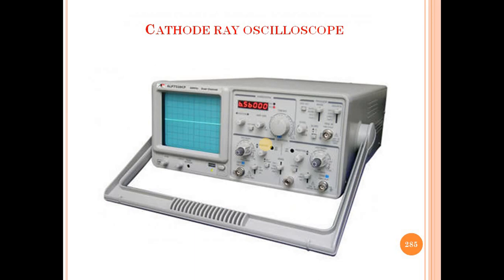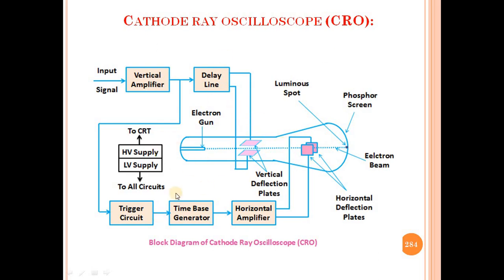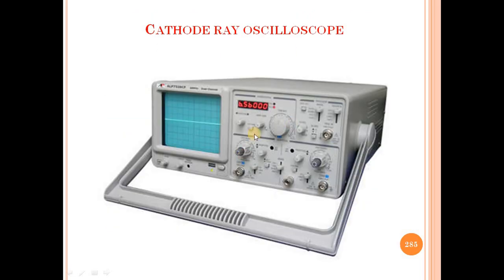This is the actual photograph of the cathode ray oscilloscope. This is the internal circuitry. Here we have some knobs for signal strength, magnitude, and intensity, which can be adjusted using different knobs.